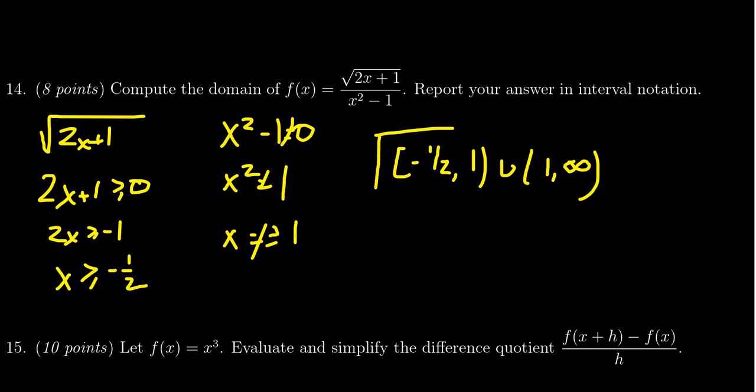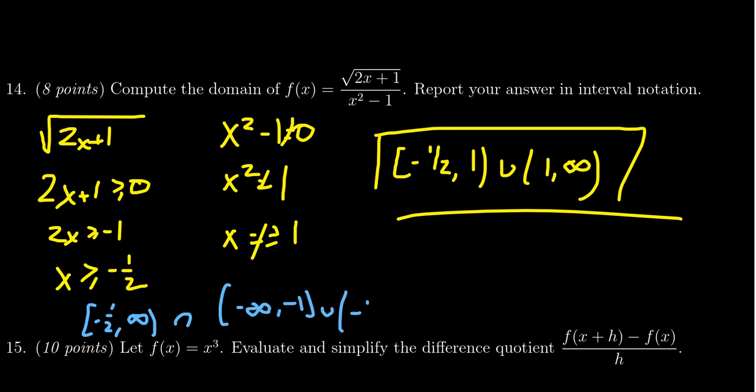This would be the domain of our function. We can only accept things greater than negative 1 half. So we get this. We have to intersect that with the domain here. The domain here was negative infinity to negative 1 union, negative 1 to 1 union, 1 to infinity. You'll notice that this domain makes no mention of negative 1, like jumping over it because negative 1 is less than negative 1 half. And so this one already told us we weren't ever going to be close to negative 1 in the domain.